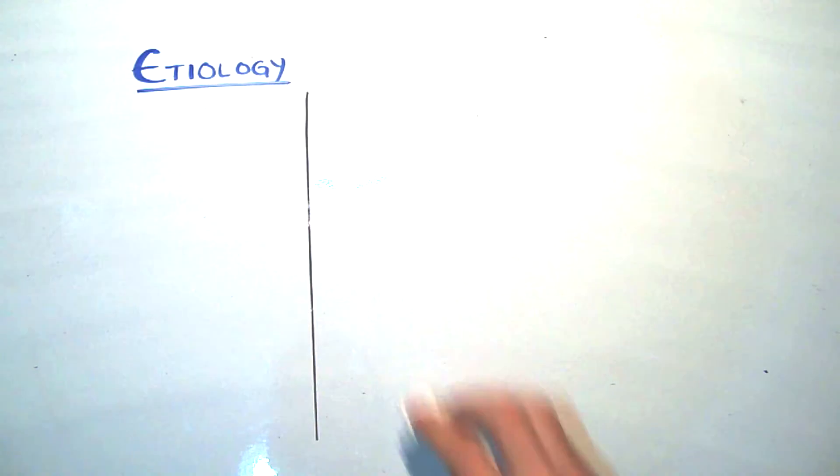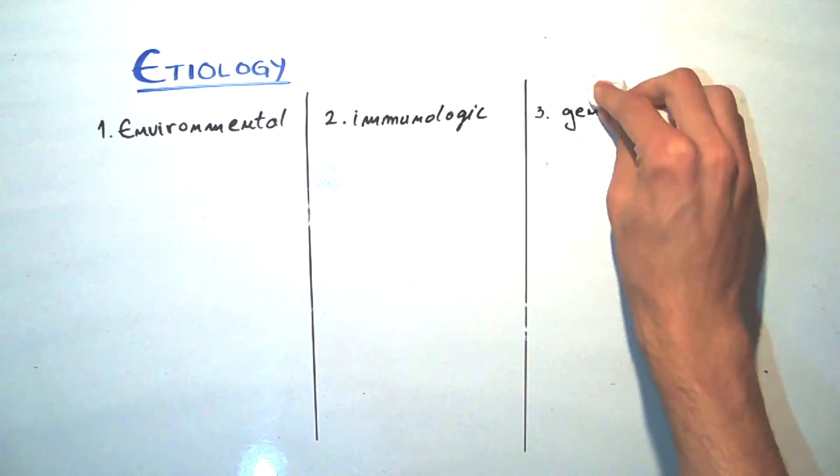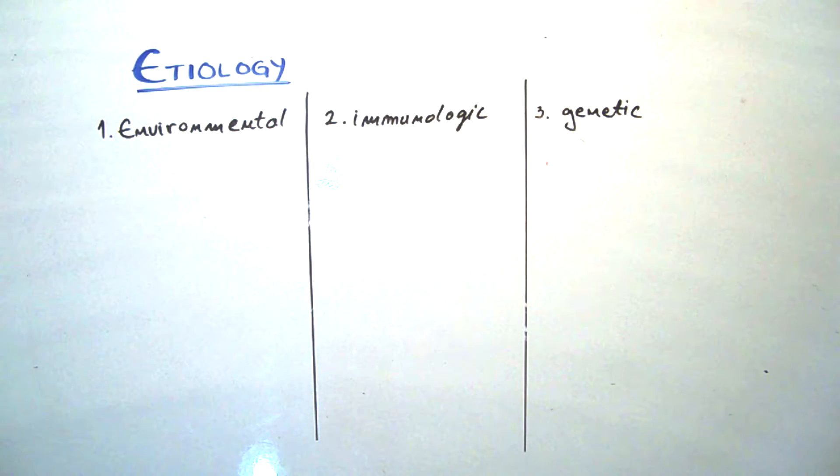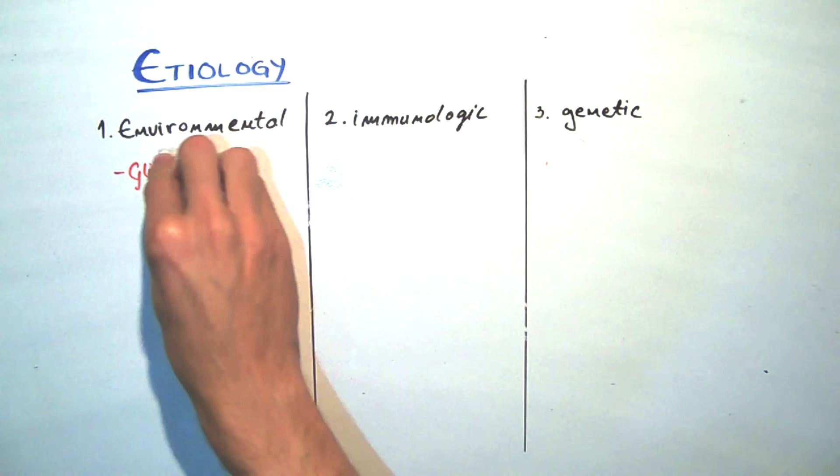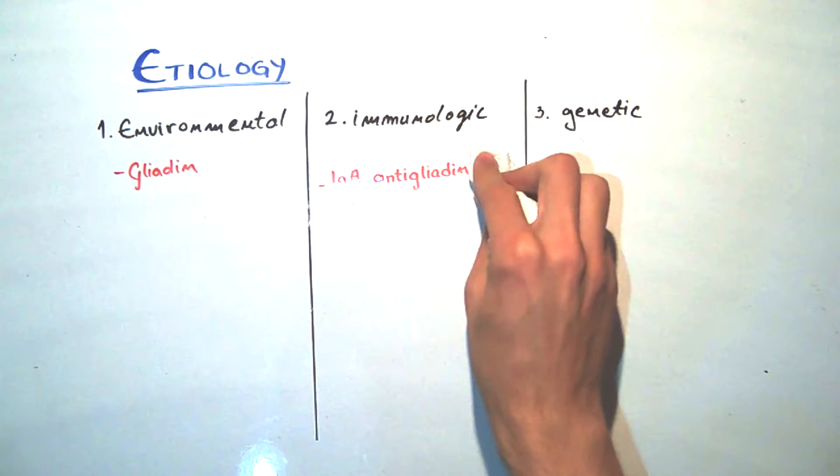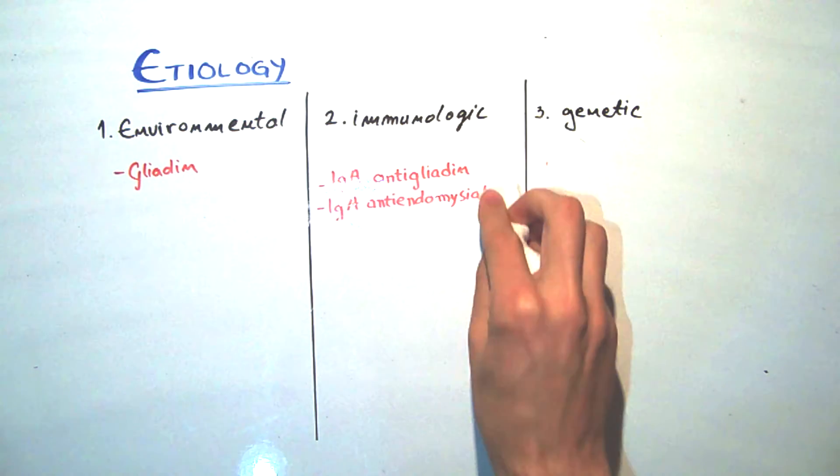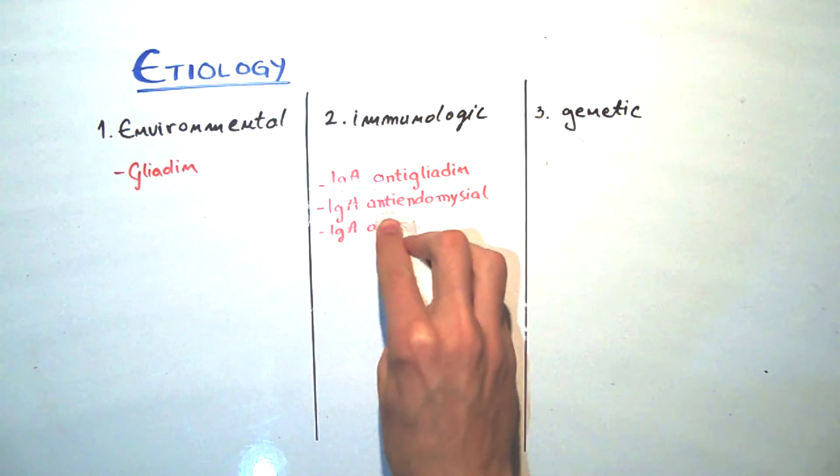The etiology is not known, but environmental, immunologic and genetic factors contribute to the disease. One environmental factor is gliadin, which is a component of gluten presented in wheat, barley and rye, as mentioned earlier. The reason that we put immunological factor as a cause for the disease is the presence of some serum antibodies, such as anti-gliadin, anti-endomysial and tissue transglutaminase immunoglobulins.